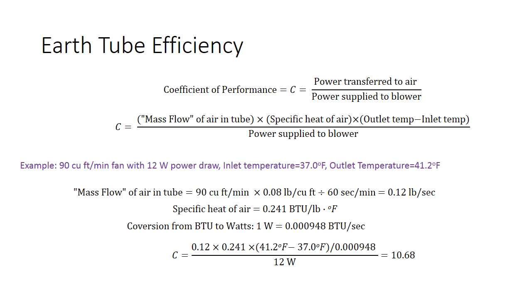As a concrete example, I've got a 90 cubic foot per minute fan. It draws 12 watts. Let's say the inlet temperature was 37 and the outlet temperature was 42. The mass flow of the air in the tube is 90 cubic feet per minute. The density of air is 0.08 pounds per cubic foot. Divide by 60 to convert from minutes to seconds. We get a mass flow of 0.12 pounds per second, which is a surprising amount considering you don't think air weighs very much, but it actually does.